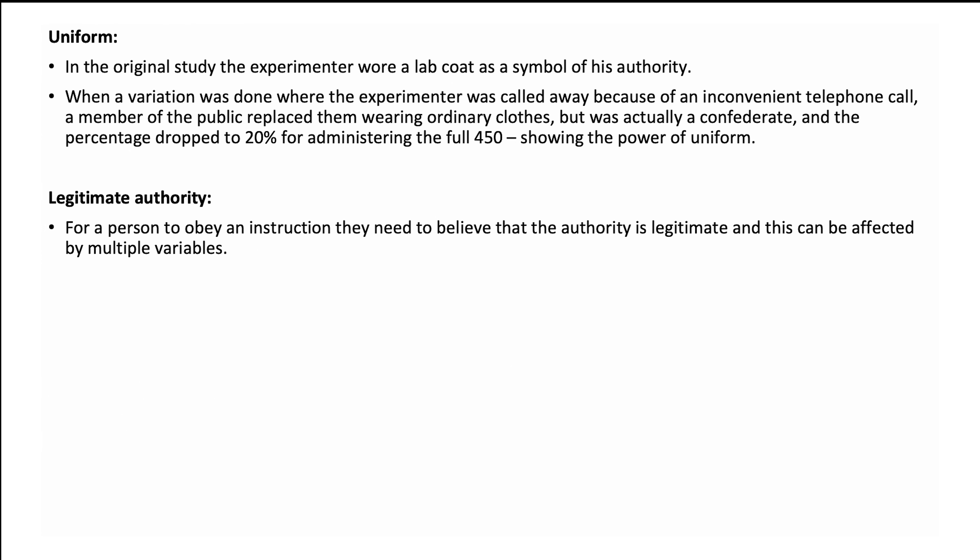The final variation is uniform. In the original study, the experimenter wore a lab coat as a symbol of authority. However, in a variation, the experimenter was called away due to a phone call, and a member of the public replaced them wearing ordinary clothes. This person was a confederate, aware of the aims of the study. When the confederate was put in charge, the percentage of obedience dramatically dropped to 20% for individuals who administered the full 450 volts, showing the power of uniform.